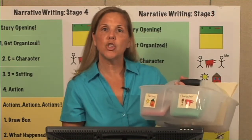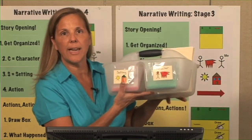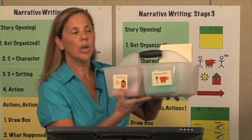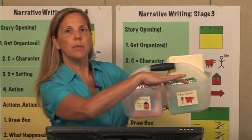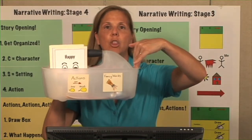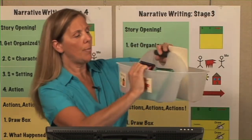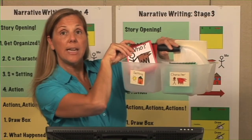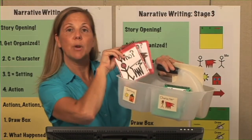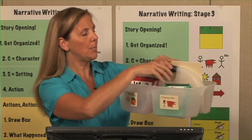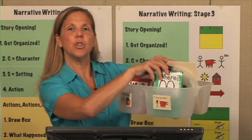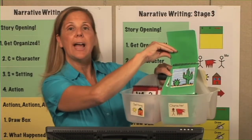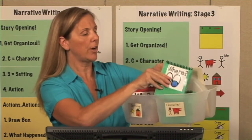If you saw the Stage 2 writing lesson, you already saw this toolkit. It's just a little plastic box that you can buy in any home goods store. It has two little pockets on one side and a large section on the back side. Notice I have setting and character — these are flip books that you can get in this manual. You can have different pictures of animals and people in these flip books. You also have flip books that show the settings, so you could have your setting flip books showing different places where your character could have this story.